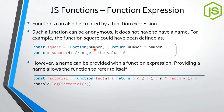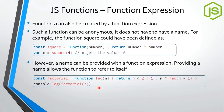We can also provide a name in a function expression — useful for recursive functions. In this case, the function is named fact but the variable holding its reference is factorial. When calling the function recursively, we use fact inside the body. However, when calling it externally, we use the variable name factorial, not fact, because fact is only available within the function's own body.